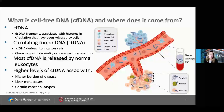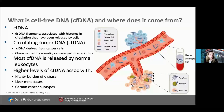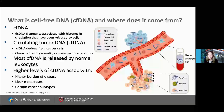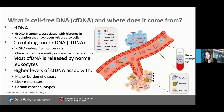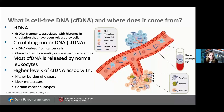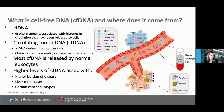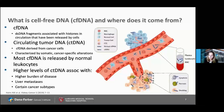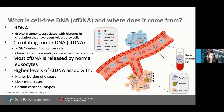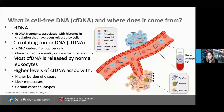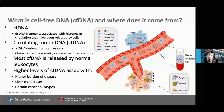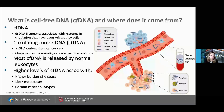What is cell-free DNA and where does it come from? Cell-free DNA is double-strand DNA fragments associated with histones in circulation, released by cells through apoptosis, necrosis, or shedding. The biology is not fully understood. Circulating tumor DNA, or ctDNA, is cell-free DNA derived specifically from cancer cells, characterized by somatic cancer-specific alterations — which is why these tests are so specific. Most cell-free DNA is actually released by normal leukocytes, emphasizing that the signal-to-noise ratio is challenging and why the sensitivity for these tests must be so high. Higher levels of ctDNA are associated with higher burden of disease, liver metastases, and certain cancer subtypes.